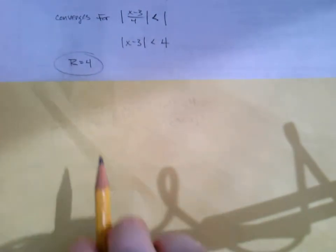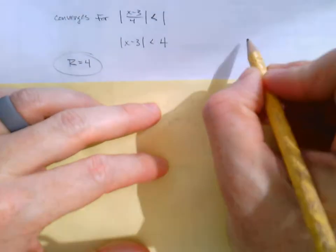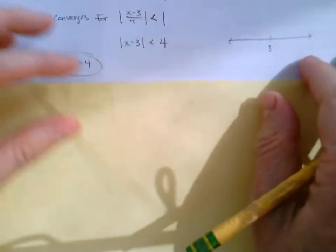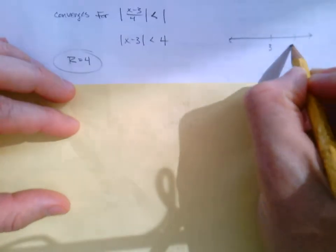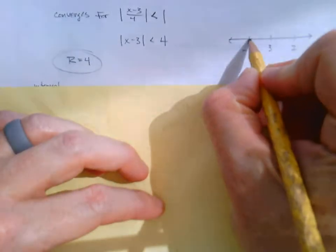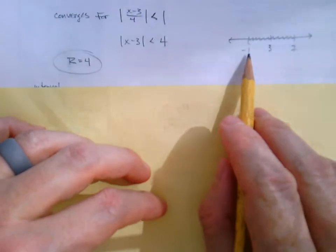Let me erase this at this point. Well, once we have the radius of convergence, we want the interval. So right now I can tell I'm centered at 3. And if I move 4 in each direction, I'm going to be at 7 and at negative 1. I know I at least converge in the middle.